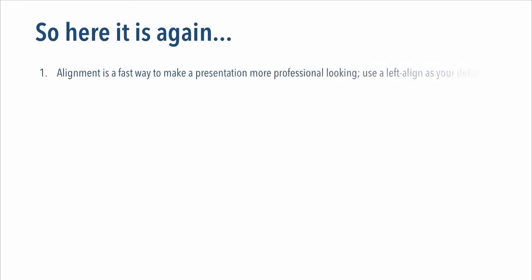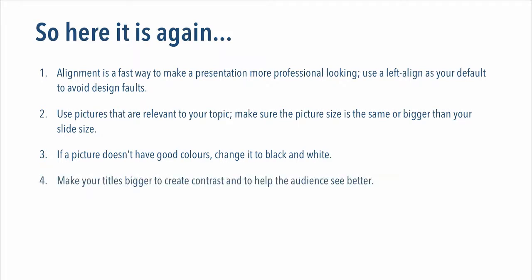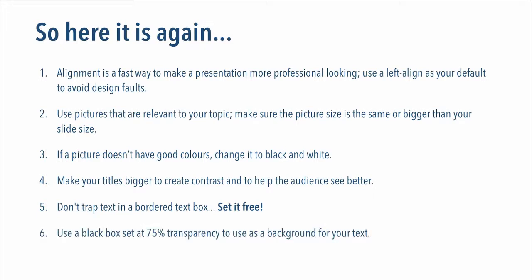So here it is again. Number one, alignment is a fast way to make a presentation more professional looking — use a left align as your default to avoid design faults. Number two, use pictures that are relevant to your topic; make sure the picture size is the same or bigger than your slide size. Number three, if a picture doesn't have good colors, change it to black and white. Number four, make your titles bigger to create contrast and to help the audience see better. Number five, don't trap the text in a border text box — set it free. And finally, number six, use a black box set at 75% transparency to use as a background for your text.